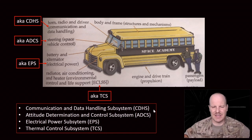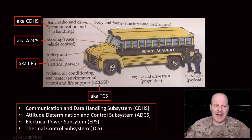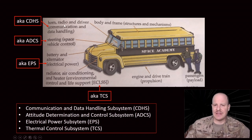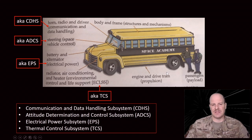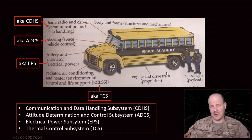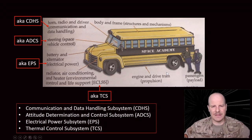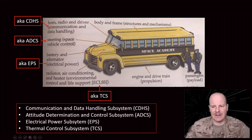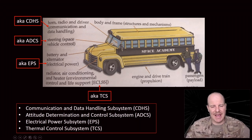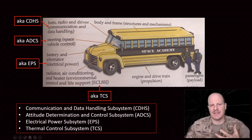The best way to think about this is to think about an actual school bus. A school bus is going to have different components — a body, a frame, a horn, radio, a driver, steering, batteries, radiators, engines — all of those things. All of those pieces and parts are part of what the bus is. But that's not really why the bus exists. The bus really exists to carry these passengers to where they want to go, and those passengers are representative of, in our spacecraft, the payload.